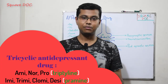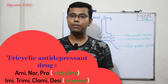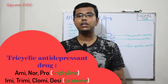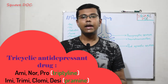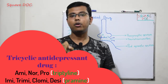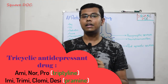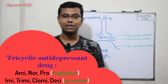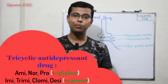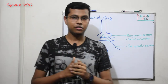TCA drugs include: amitriptyline, protriptyline, nortriptyline, imipramine, trimipramine, clomipramine, and desipramine. To remember: the triptyline group — amitriptyline, nortriptyline, protriptyline — and the pramine group — imipramine, clomipramine, desipramine. These are all Tricyclic Antidepressant drug types.